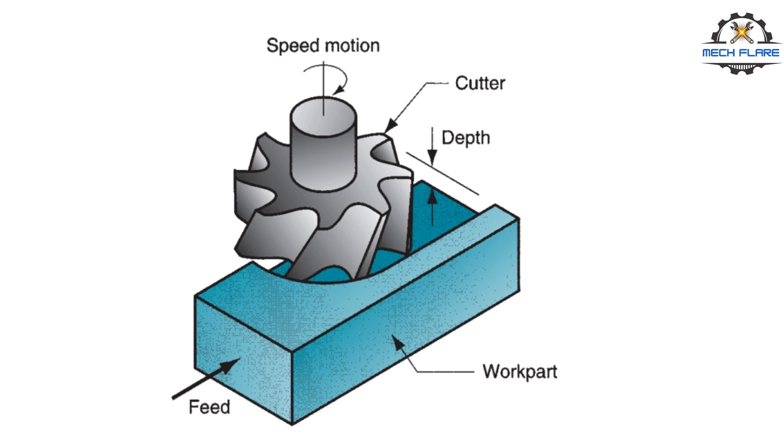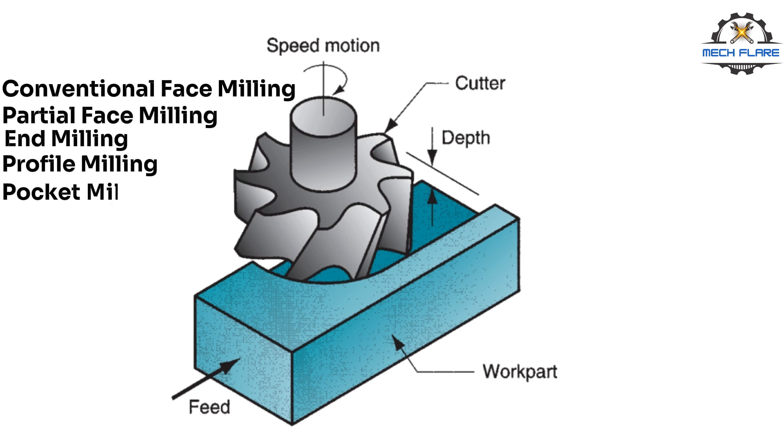Face milling. In face milling, the axis of the cutter is perpendicular to the surface being milled and machining is performed by cutting edges on both the end and outside periphery of cutter. Several types of face milling are conventional face milling, partial face milling, end milling, profile milling, pocket milling, surface contouring, etc. These will be discussed in future videos.